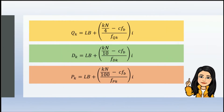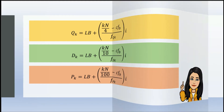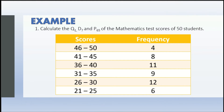Again, these are the formulas we will be using for measures of position for group data. Now that we are familiar with the different formulas, it's time for an example. Example number one: calculate Quartile 1, Decile 7, and Percentile 65 of the mathematics test scores of 50 students. The table shown represents the frequency distribution of the test scores: 46–50, 41–45, 36–40, 31–35, 26–30, and 21–25.